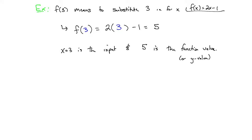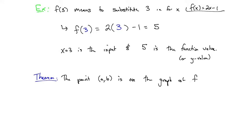Here's a theorem not often mentioned in textbooks: the point (a, b) is on the graph of f if and only if f(a) = b. The point on the graph has an x-coordinate and a y-coordinate — when you evaluate the function at your x-coordinate, you get your y-coordinate. We'll talk more about graphical interpretations in a bit.